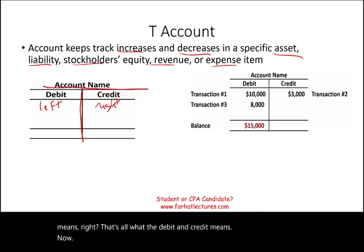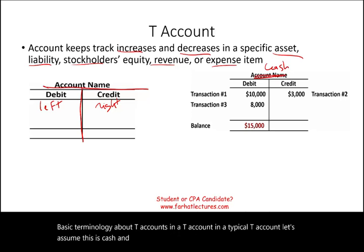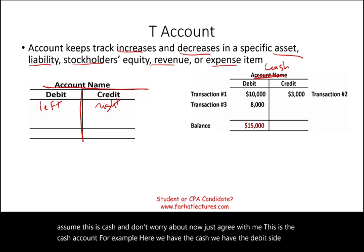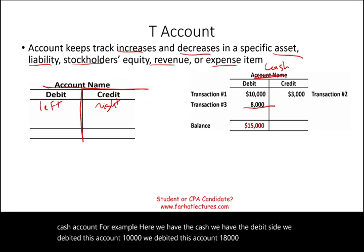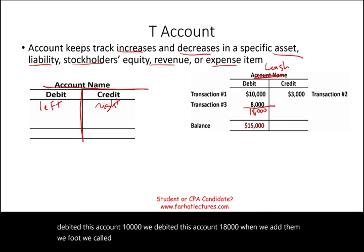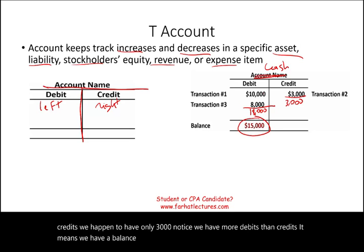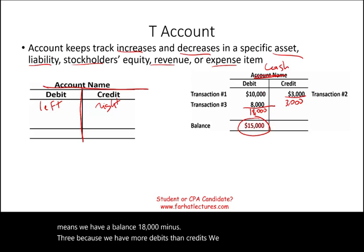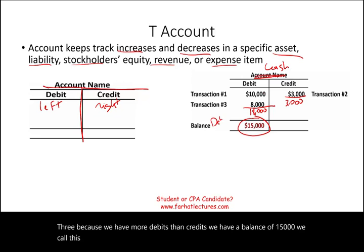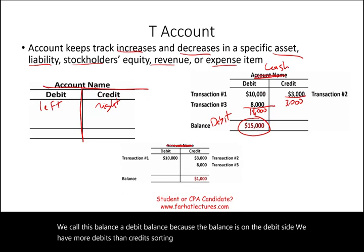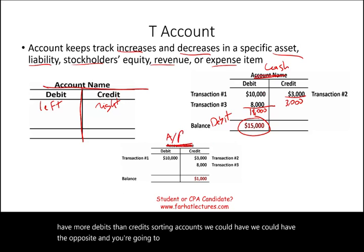In a typical T account, let's assume this is cash. We debited this account $10,000 and $18,000. When we add them up — we call this footing — we have debits totaling $28,000 on the debit side, and credits of $3,000. Since we have more debits than credits, we have a balance of $15,000. We call this a debit balance because the balance is on the debit side.